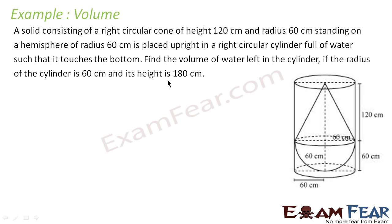Let's take one more question. The question says: a solid consisting of a right circular cone of height 120 cm and radius 60 cm, standing on a hemisphere of radius 60 cm, is placed upright in a right circular cylinder. This is my cylinder.